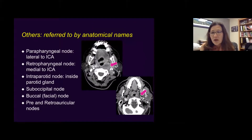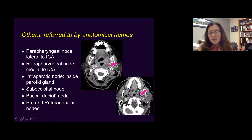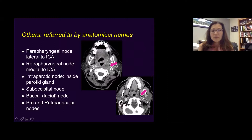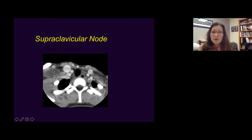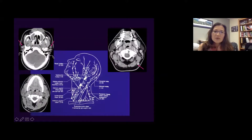There are many other lymph nodes that do not belong to the zone classifications. Those are referred to by anatomical names. The most common one is retropharyngeal lymph nodes, which are typically found high up near the skull base, between the prevertebral muscle and the internal carotid artery. Supraclavicular lymph nodes are specific to the supraclavicular fossa, and are often associated with systemic disease metastasizing to the neck — for example, GI tract, lung, or breast cancer. Other named nodes include occipital or suboccipital lymph nodes, preauricular lymph nodes, and lymph nodes within the parotid gland, called parotid lymph nodes.